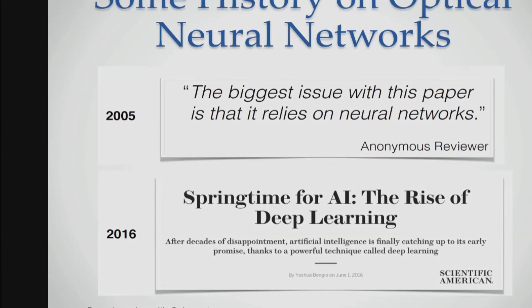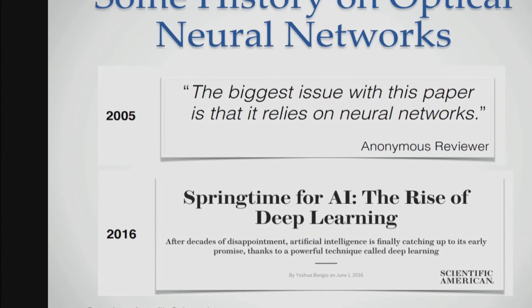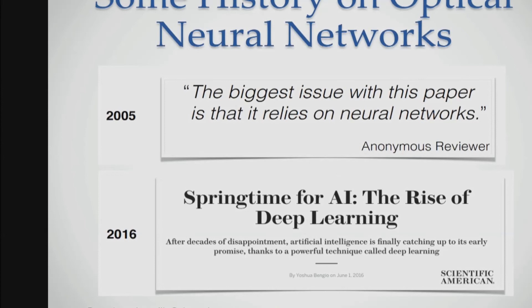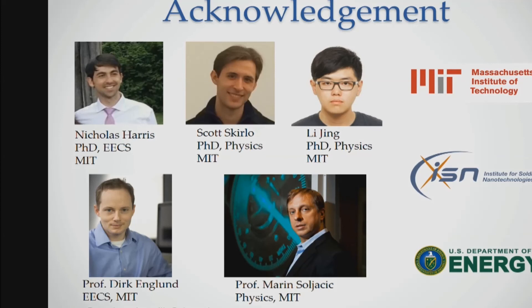Finally, all this was thanks to neural networks. 20 years ago, you submit a paper to the top conference in machine learning, it would say the biggest issue is that it relies on neural networks. But now, if you send a paper to a journal, it will reject you because the biggest issue is that it does not rely on neural networks. So this is Nick Harris, who developed the chip as a student of Dirk, and these are the collaborators and funding sources. Thank you for the attention.